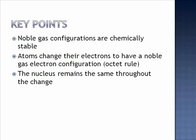Key points that need to be discussed in an answer to why atoms form ions. First, noble gas electron configurations are chemically stable. Second, atoms change their electrons to have a noble gas configuration. This tendency is called the octet rule. Fourth, the nucleus remains the same throughout the change.